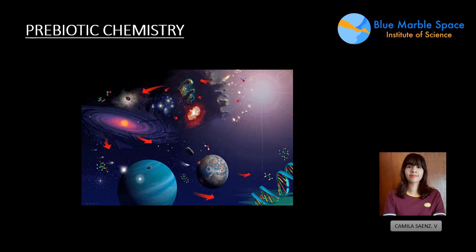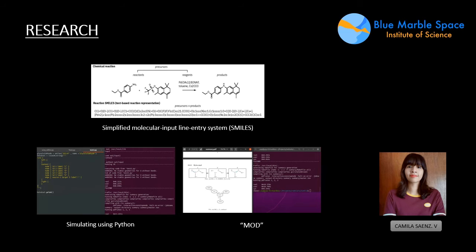It's important to mention prebiotic chemistry as the chemistry which occurred before life, or the chemistry which led to life on Earth or possibly on another planet. In order to understand the origin of life, it's important to develop a model.